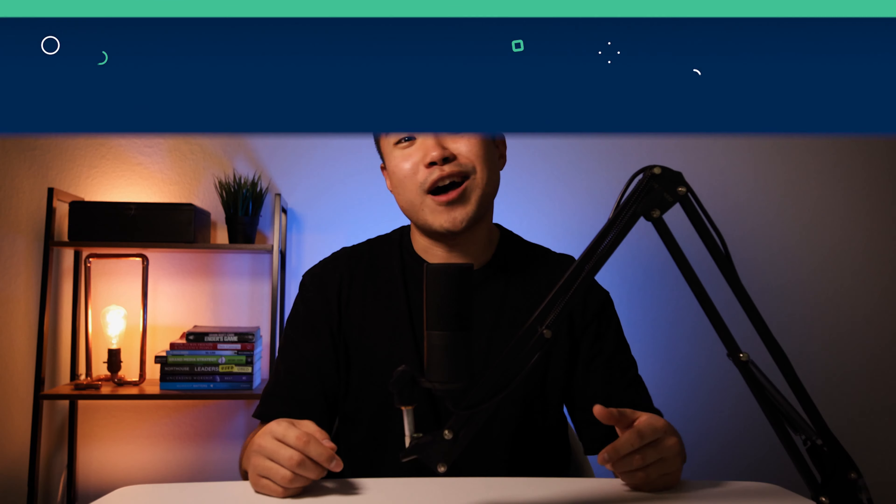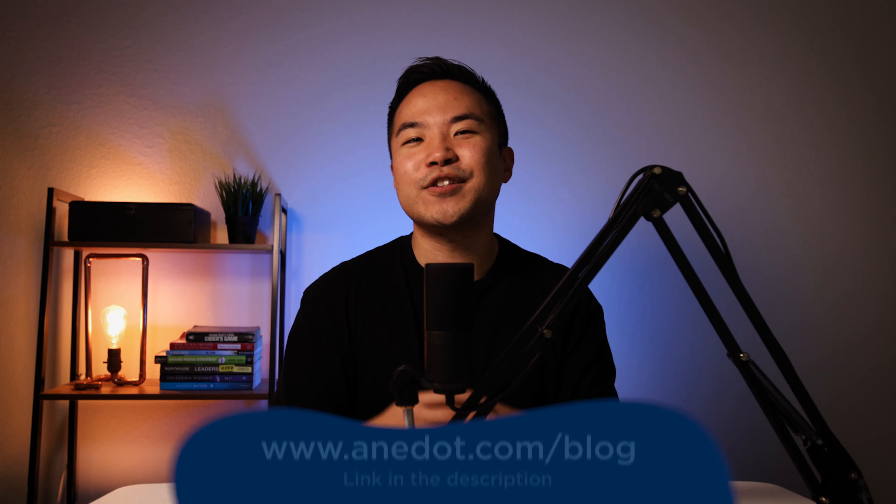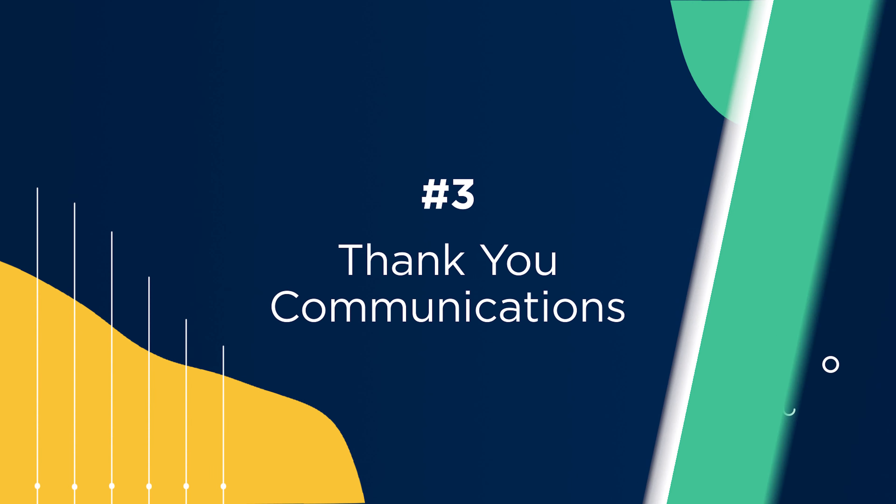Whether monthly or quarterly, impact communications should be frequent. You can create a simple strategy by focusing on two audiences: public audience, and donors and strategic partners. With your public audience, engage them weekly with social media posts and monthly through email. With your donors and strategic partners, engage them monthly through email, quarterly through a mailed report, and yearly through a digital and mailed annual report. For more information on how to craft the best emails and annual reports, check out our blog — the link is in the description.